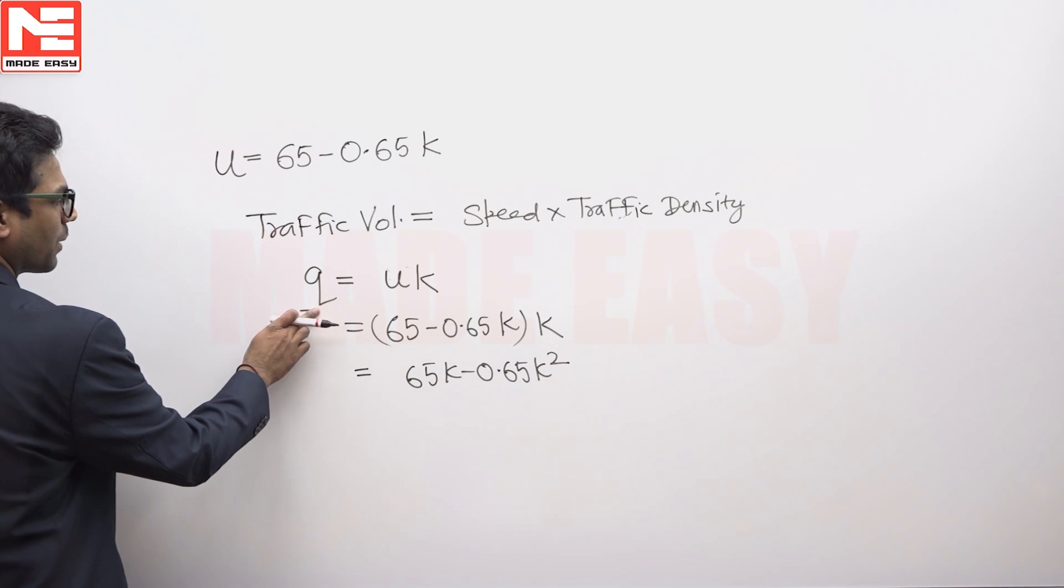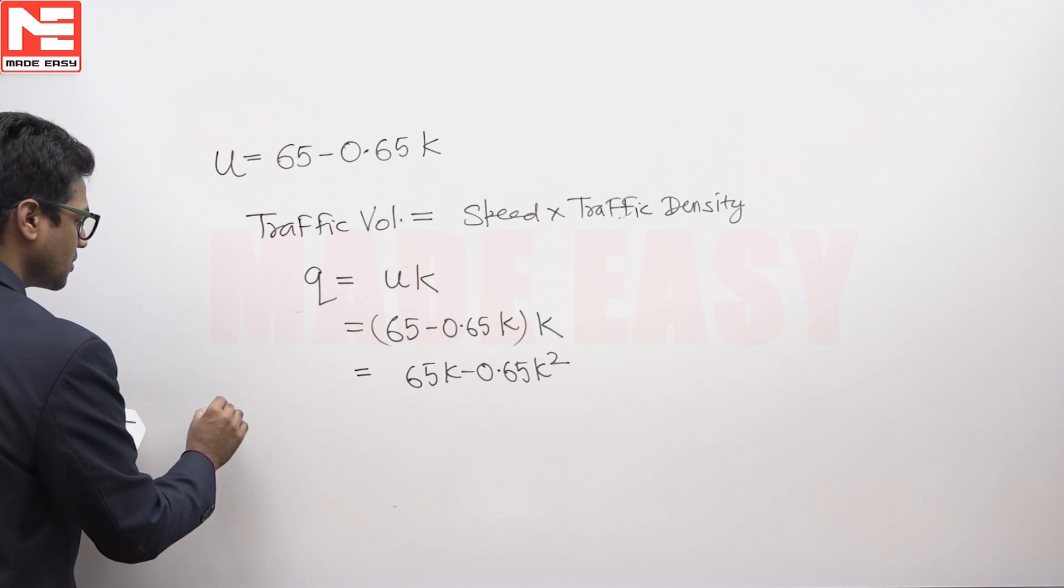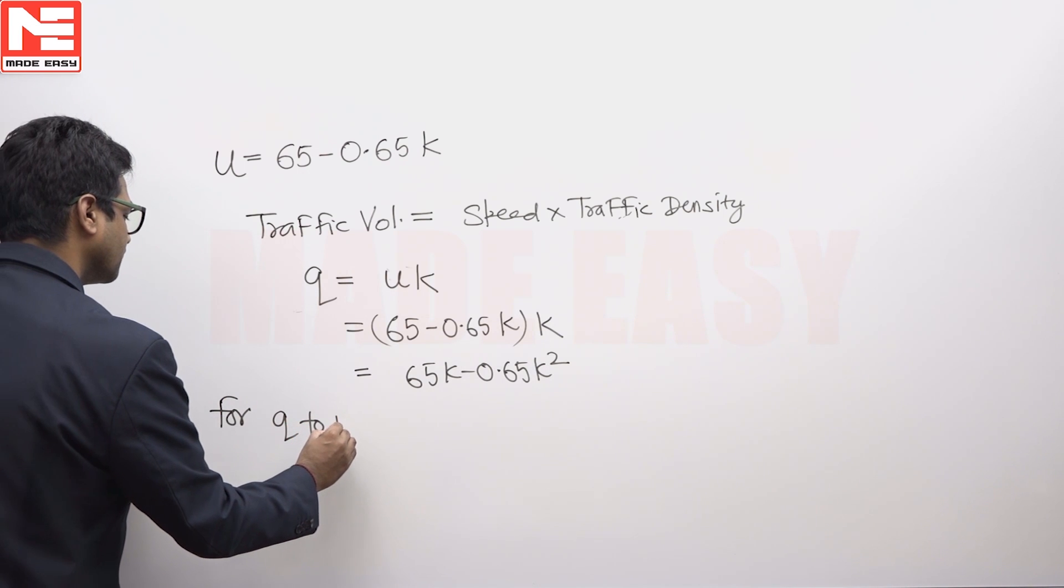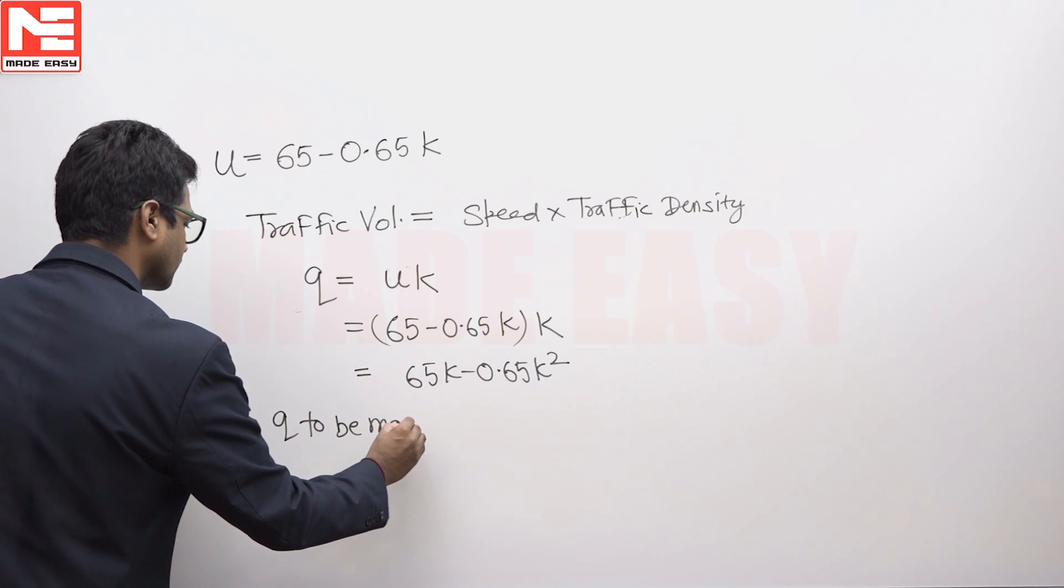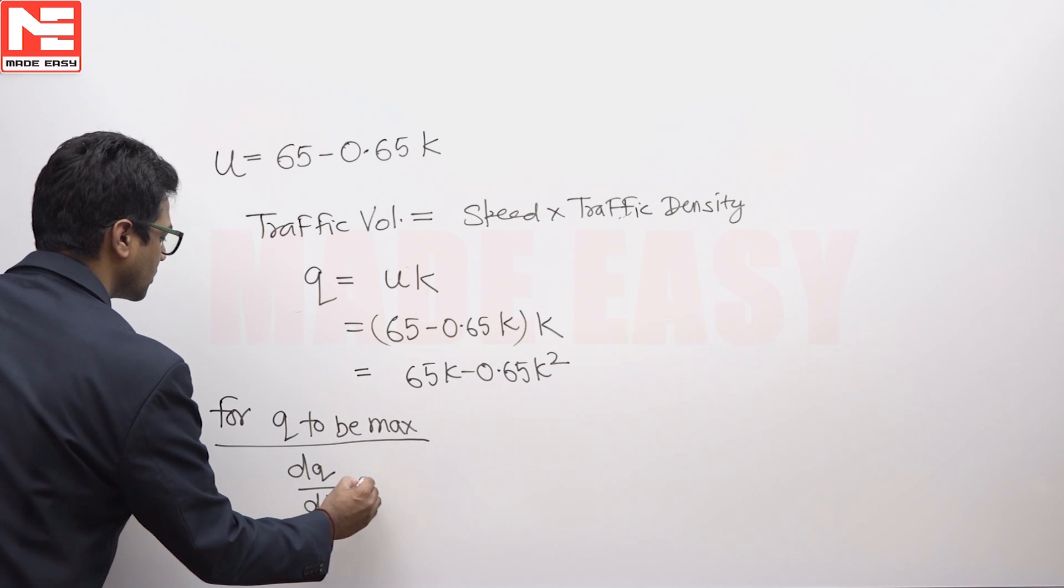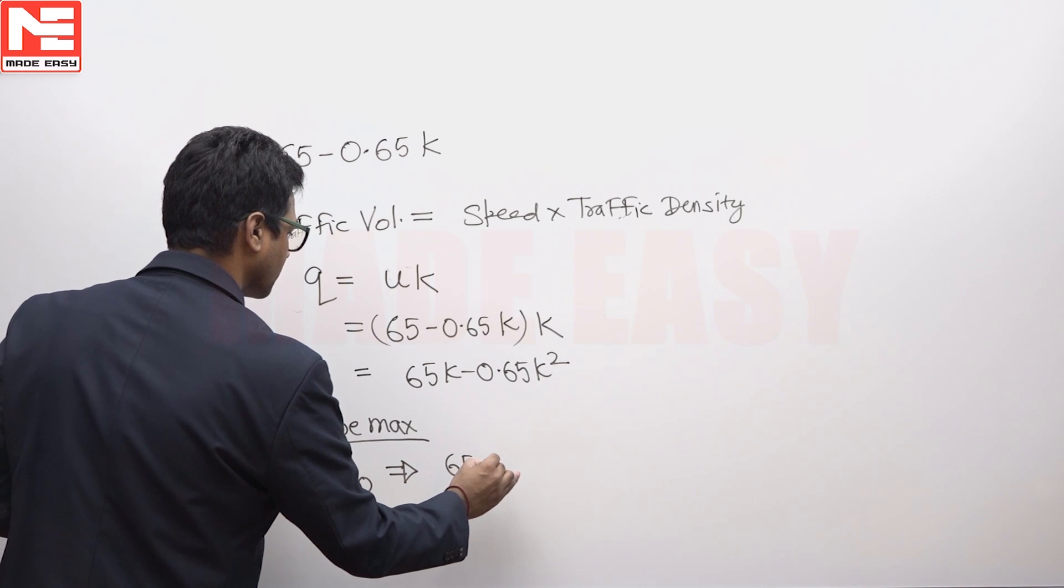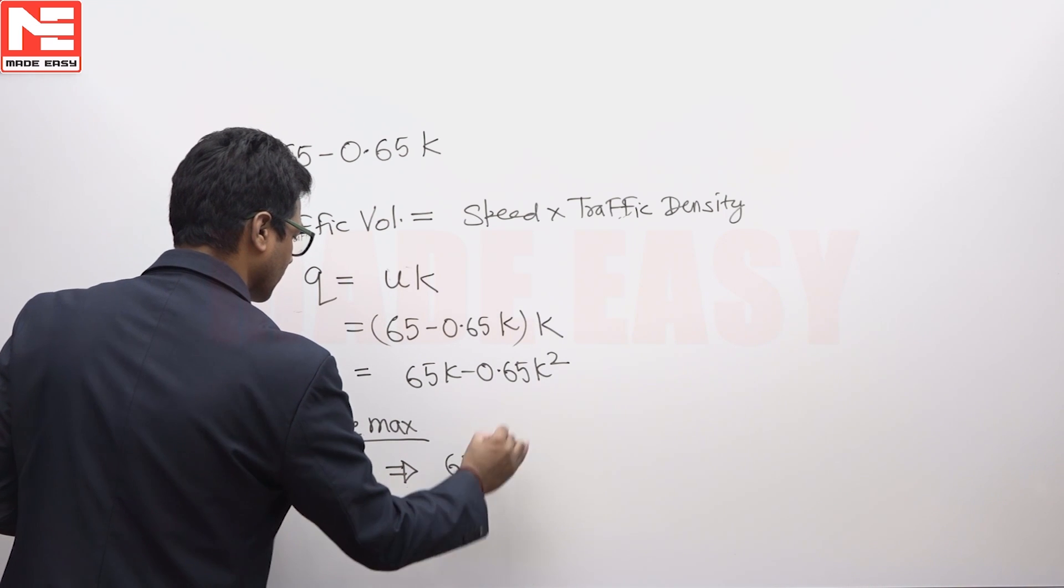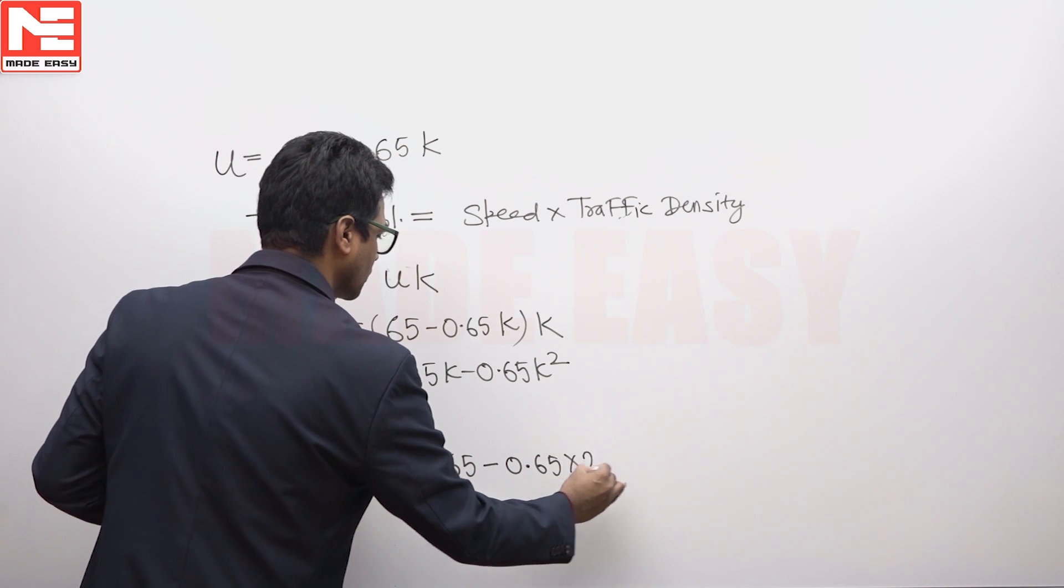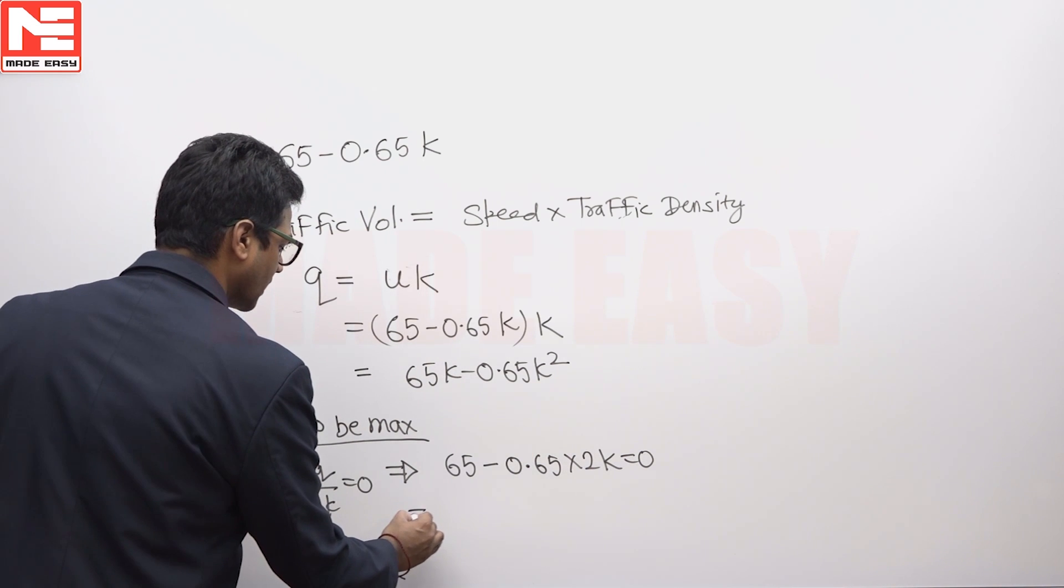But this is traffic volume. In order to calculate the traffic capacity, the traffic volume should be maximum. So for q to be maximum, we can write dq/dk equals 0, and hence we can write 65 minus 0.65 times 2k equals 0. We have differentiated this.